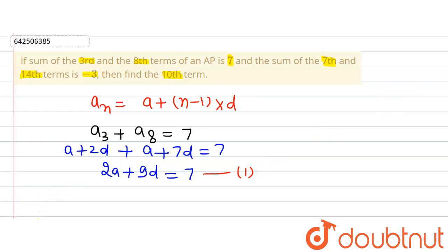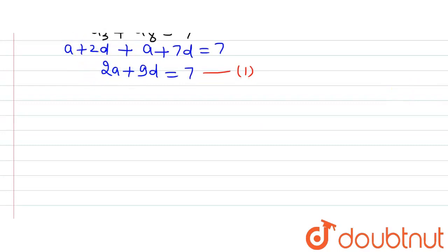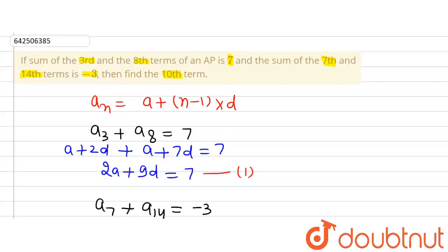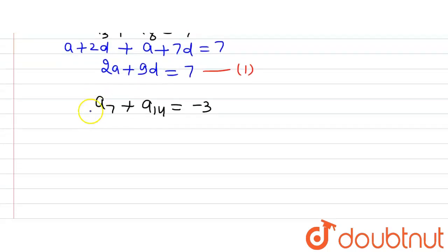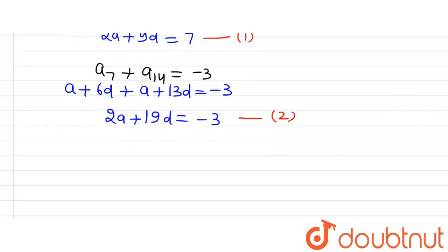The next statement says that the sum of the seventh and fourteenth terms, A7 + A14, is equal to minus 3. Using the formula, A7 = A + 6D and A14 = A + 13D, so 2A + 19D = minus 3. This is equation 2.